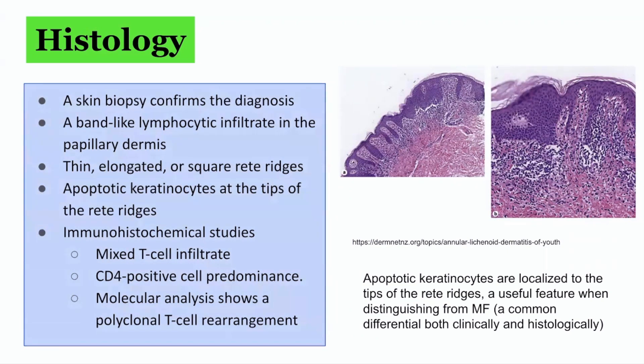Immunohistochemical studies show a mixed T-cell infiltrate with CD4-positive cell predominance, and molecular analysis shows polyclonal T-cell rearrangement. The apoptotic keratinocytes localised to the tips of the rete ridges provide a useful distinguishing feature compared with mycosis fungoides, which is a common differential.